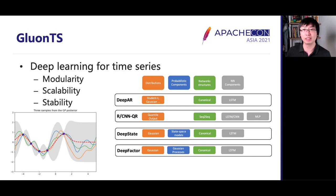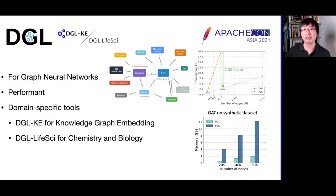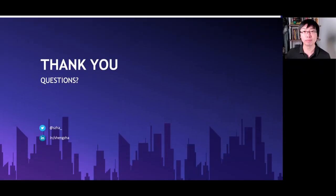For time series analysis, GluonTS is a deep learning toolkit for time series that powers Amazon Forecast. It's designed to be modular and scalable with production stability. You can mix different modules of distributions, probabilistic components, neural network structures, and different approaches for time series modeling. Last but not least, Deep Graph Library, or DGL, is a flexible graph neural network toolkit. It is widely adopted in the research community and has very high performance. It also offers domain-specific tools for knowledge graph embedding and life science in chemistry and biology. And with that, thank you for listening.